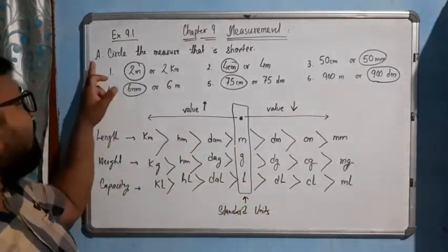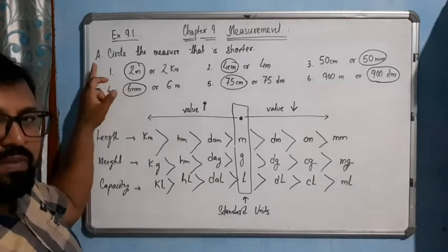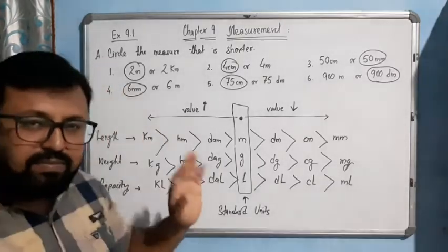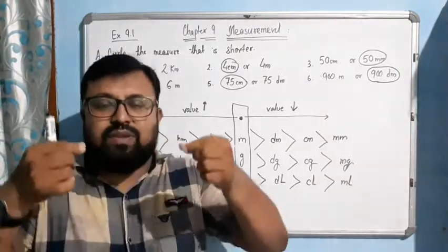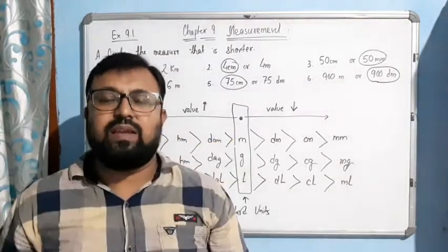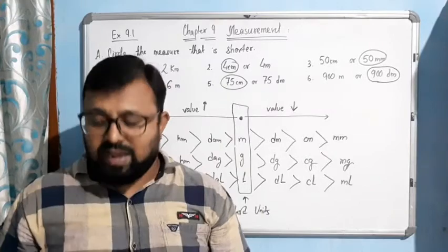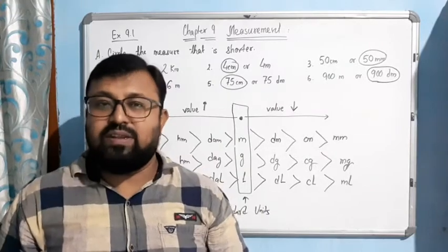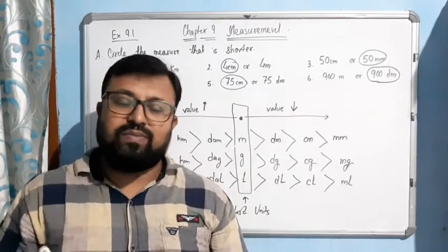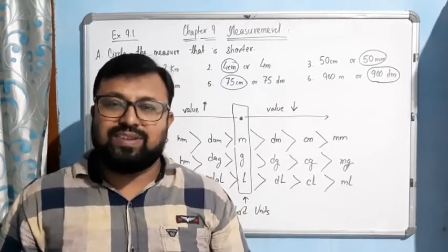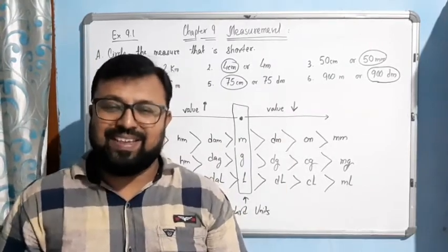In this way you can do it for weight and capacity also. I hope you have understood this part. Question B is very simple — there is a line and you simply have to measure it with the help of a scale. I think you have already done this in geometry. So you will find it by yourself. Thank you.